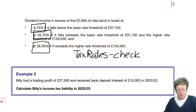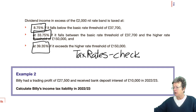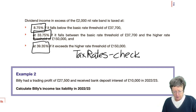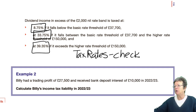We're going to do Billy — example number two. Billy has trading profits of £27,500 and bank deposit interest of £10,000. So that's Billy's situation, and we're going to do Billy's tax computation.